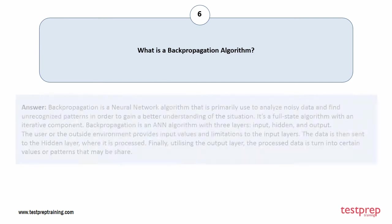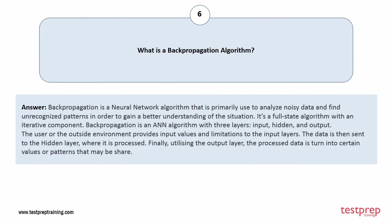Question number six: what is backpropagation? Backpropagation is a neural network algorithm primarily used to analyze noisy data and find unrecognized patterns. It is a full-state algorithm with an iterative component, consisting of three layers: input, hidden, and output. The user provides input values to the input layer, data is processed in the hidden layer, and the output layer converts the processed data into values or patterns.